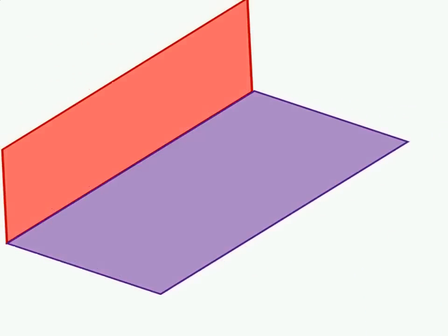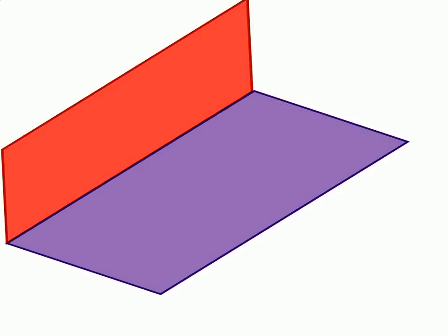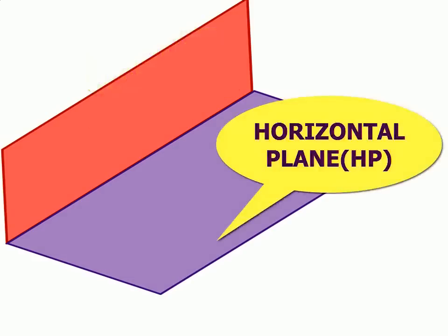The two planes of projection used for orthographic projection are called reference planes or principal planes of projection. The vertical plane of projection is denoted as VP, the other horizontal plane is denoted as HP.